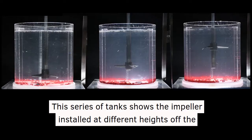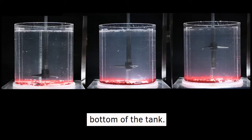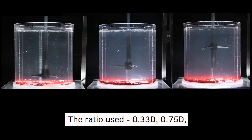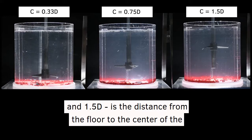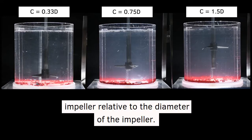This series of tanks shows the impeller installed at different heights from the bottom of the tank. The ratios used are 0.33D, 0.75D, and 1.5D, where D is the distance from the floor to the center of the impeller relative to the diameter of the impeller.